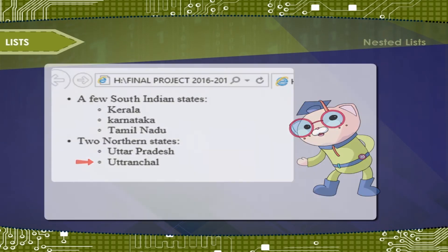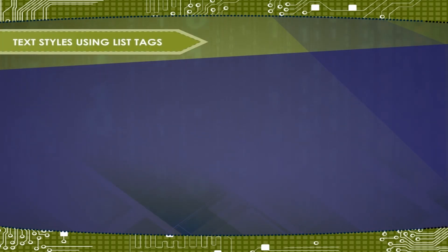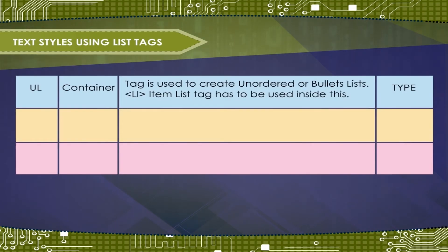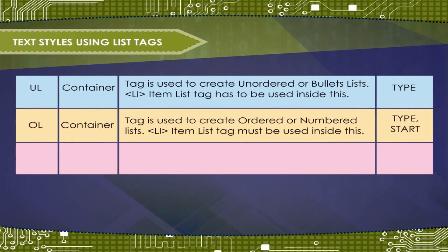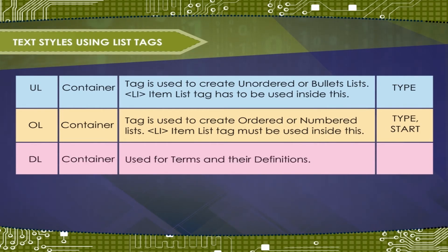Summary of list tags: UL is a container tag used to create unordered or bullet lists; the LI item tag must be used inside it. OL is a container tag used to create ordered or numbered lists; the LI item tag must be used inside it with a 'type' and 'start' attribute. DL is a container tag used for terms and their definitions.